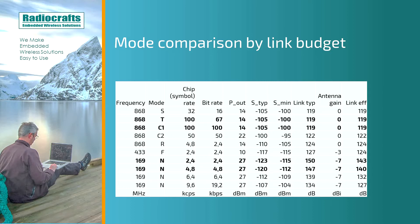The drawback of 169 MHz is a lower data rate of 2.4 or 4.8 kilobits per second, which means longer transmissions and increased power consumption. But it is still possible to make water and gas meters using 169 MHz with battery lifetimes from 15 to 20 years.